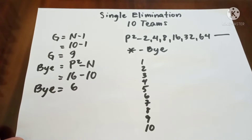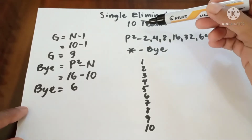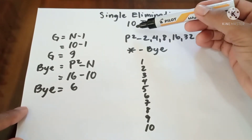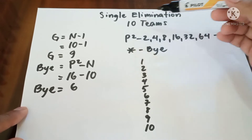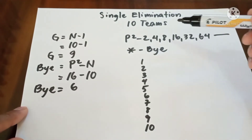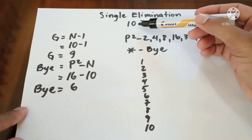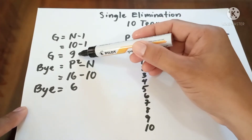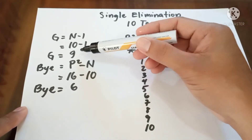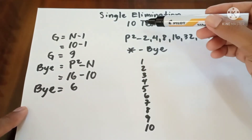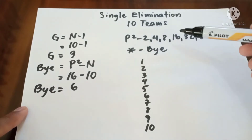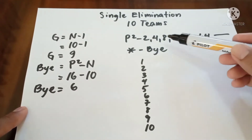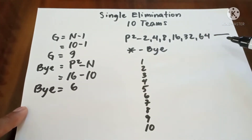Hello everyone. This is single elimination for 10 teams, or 10 number of entries. With 10 teams, we have 9 games. Since 10 is not included in the power of twos, we need to calculate the number of byes.